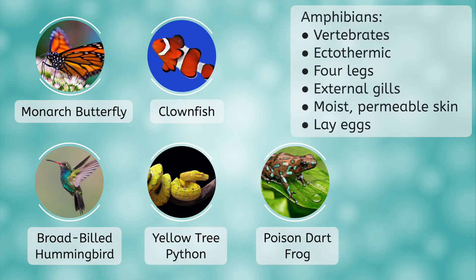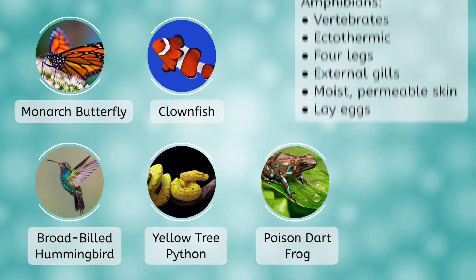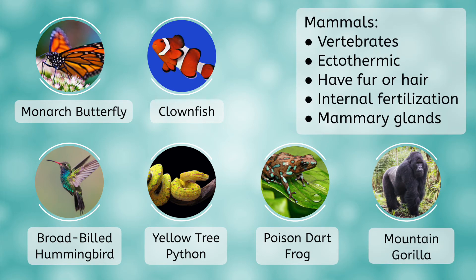Next up, amphibians. They are also cold-blooded and lay eggs, but have four legs, external gills, and moist permeable skin. Finally, we have mammals. Mammals are warm-blooded, have fur or hair, reproduce via internal fertilization, meaning they give birth to live young, and have mammary glands to produce milk for their young. As you can see, there is a lot of overlap in these groups, but each is distinct in their own right. Scientists use these distinctions to identify and classify animals.